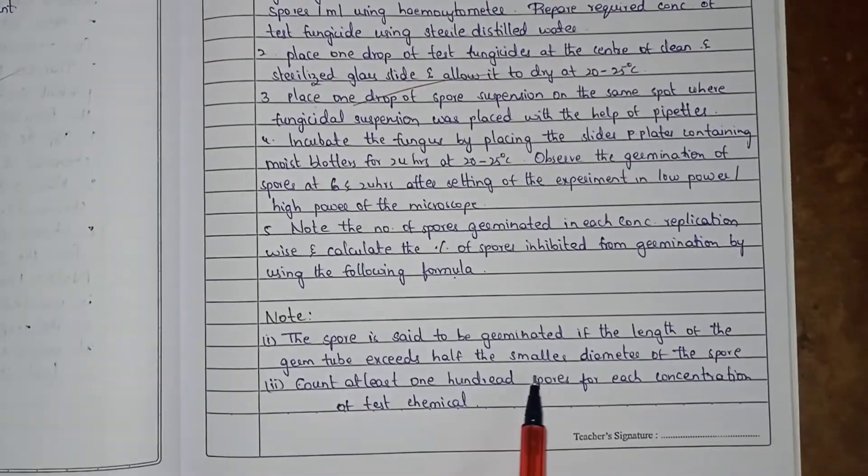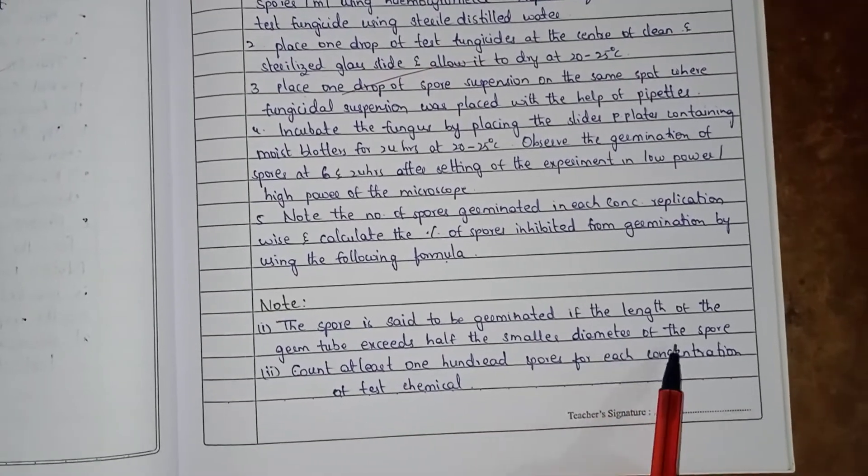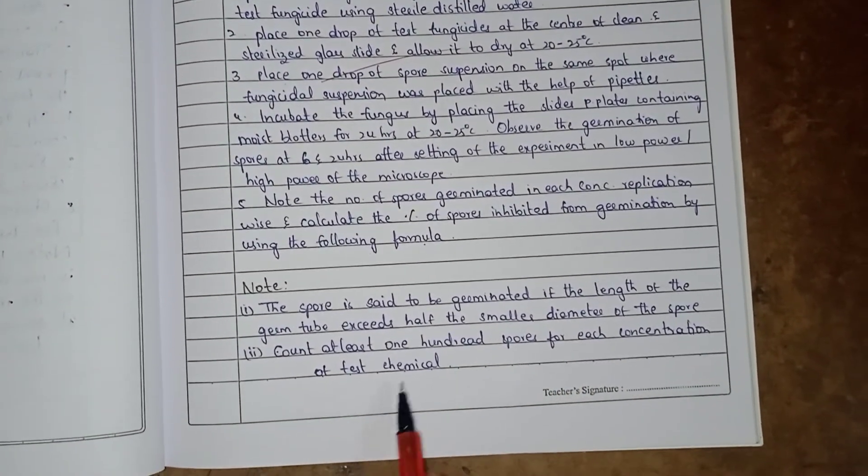The spore is said to be germinated if the length of the germ tube exceeds half the smaller diameter of the spore. Count at least 100 spores for each concentration of test fungicide.